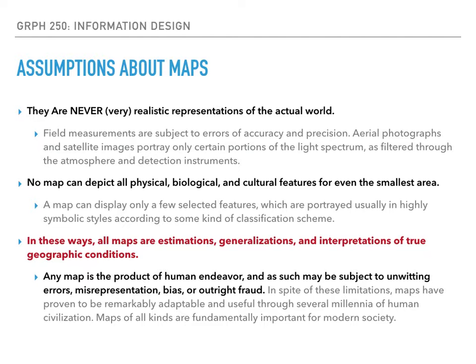An interesting assumption about maps is that they're never actually realistic representations. There's always some sort of skewing based on accuracy or precision. A map can't depict all physical, biological, and cultural features even in the smallest area. So it already has to have a narrative — you're already editing a map and deciding what is going to go where. As a result, they're estimations, and you can definitely see that when you look at the history of map making and how much it has evolved.